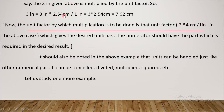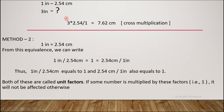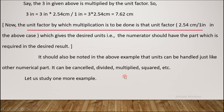We get the desired unit in the numerator part. We convert inches to centimeters by choosing the appropriate unit factor. We have two unit factor options: 1 inch / 2.54 cm = 1, or 2.54 cm / 1 inch = 1. Since we want centimeters in the numerator, we choose 2.54 cm / 1 inch.